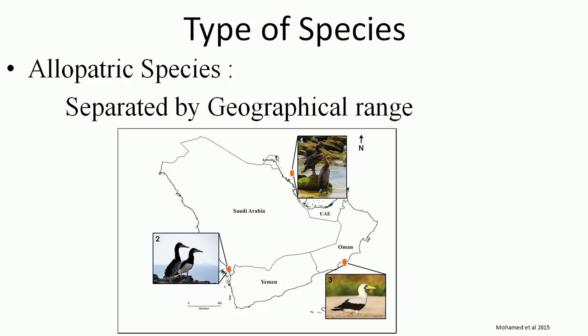Now we go through the types of species. Which are the types of species? The first one is the allopatric species. Allopatric species deals with species that are developed and separated by geographical zones. Those species are developed due to geographical range or geographical separation, and this type of species is known as allopatric species.